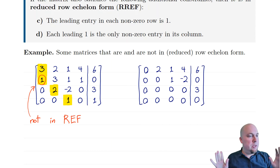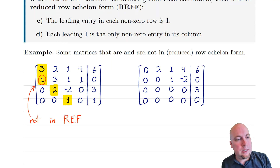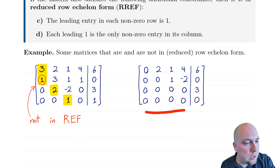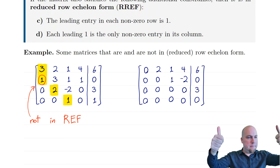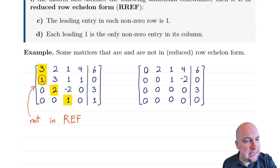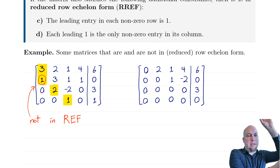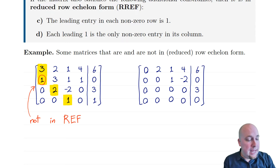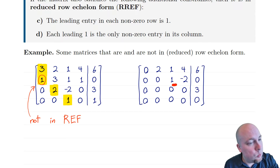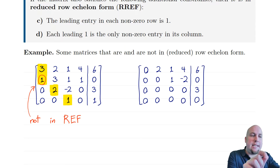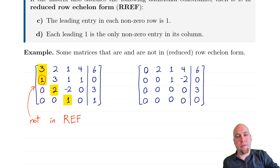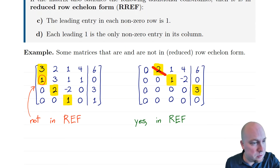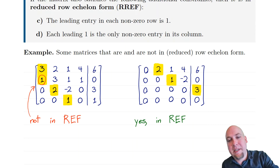Another example — is this matrix in row echelon form? First check for zero rows: there's only one, and it's tucked away at the bottom, so property A is good. Next check the leading entries: there's a leading entry here, here, and here. Is every leading entry to the right of all leading entries above it? Yes — this leading entry one is to the right of the leading entry two above it, and the leading entry three is to the right of the two and one above it. It doesn't have to be immediately to the right, just anywhere to the right. So yes, this matrix is in row echelon form.